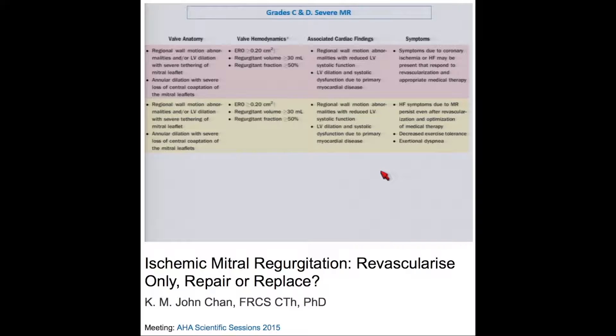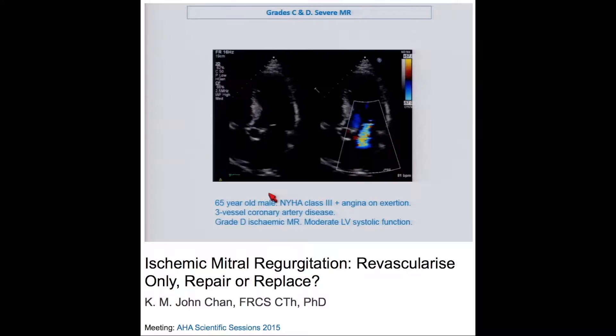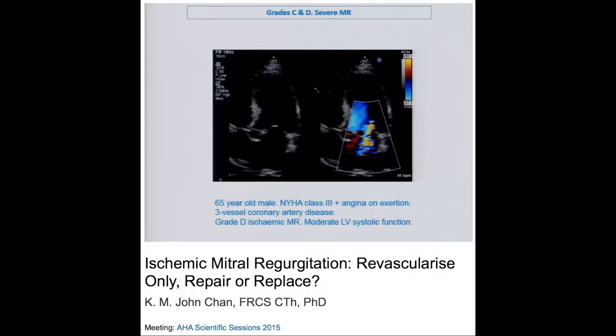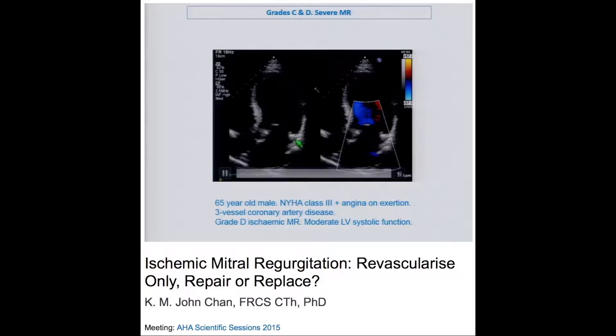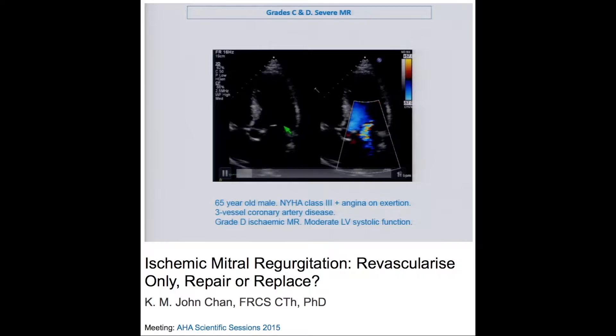Grade C and D patients have severe MR — ERO above 0.2, regurgitant volume above 30 mL, regurgitant fraction above 50%, either asymptomatic or symptomatic — with more significant leaflet tethering, annular dilatation, and loss of co-optation. An example: a 65-year-old man in NYHA class 3, angina on exertion, 3-vessel disease, grade D severe ischemic MR with ERO of 0.22 and moderate LV systolic function, showing significant leaflet tethering.